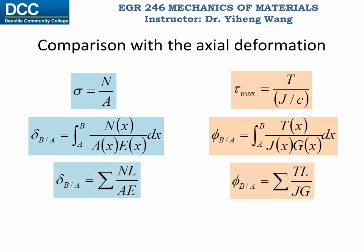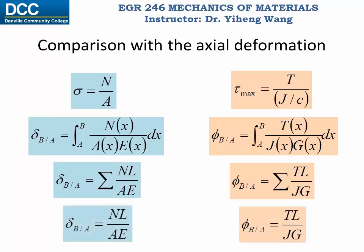Both equations can be reduced to a summation form if there are several segments and within each segment the internal reaction, geometric property, and material property are all constants. And if you only have one segment with constant internal reaction, constant geometric property, and constant material property, then both equations reduce to a simple closed form.